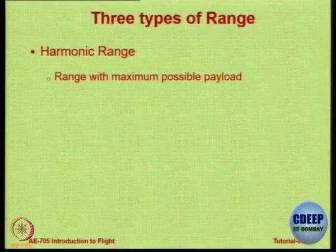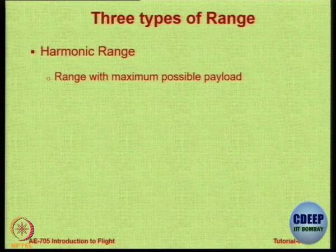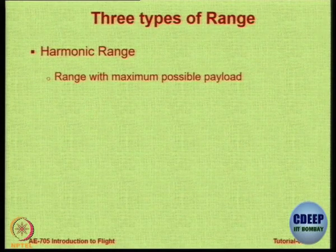Not all fuel is usable — you have to keep some for reserve — and the specific range does not remain constant. There are three types of ranges defined. We have only studied one range in our lecture. The first is called harmonic range — that is how far you can go without compromising on maximum payload. An airline wants to carry maximum possible payload to make money, whether cargo or passengers. That range corresponding to point A in the range-payload diagram is the harmonic range.